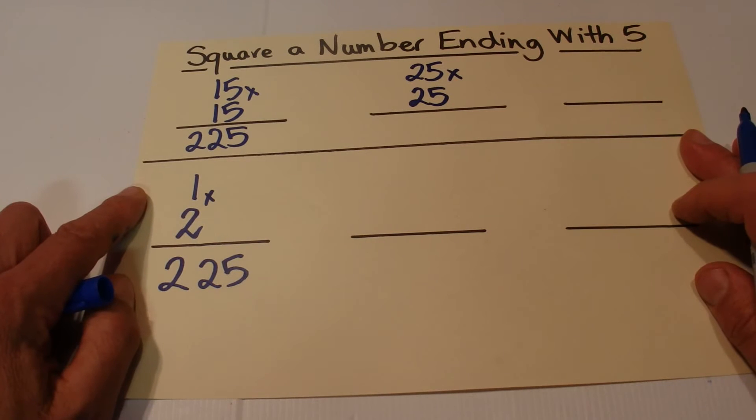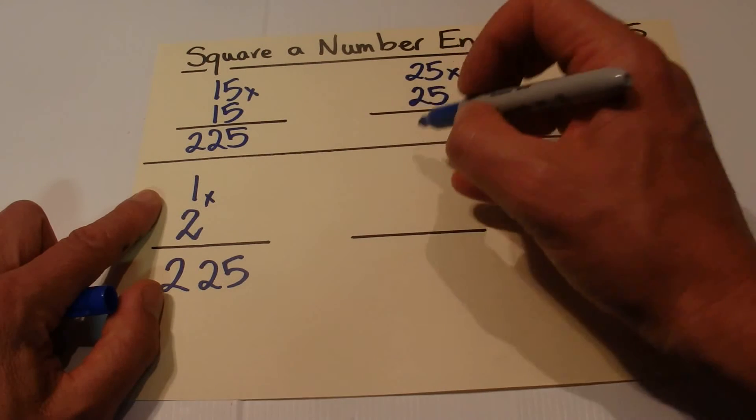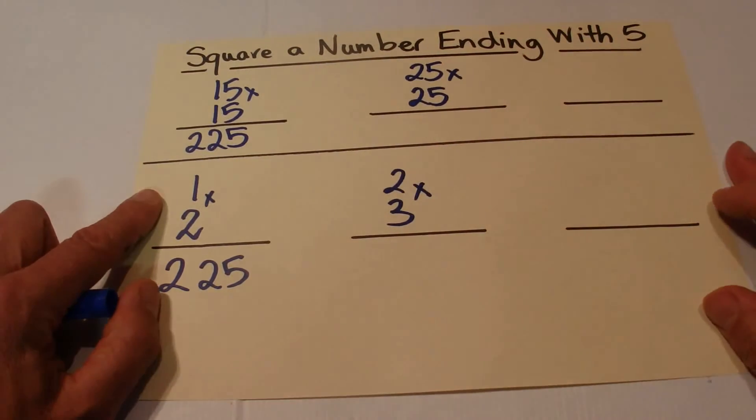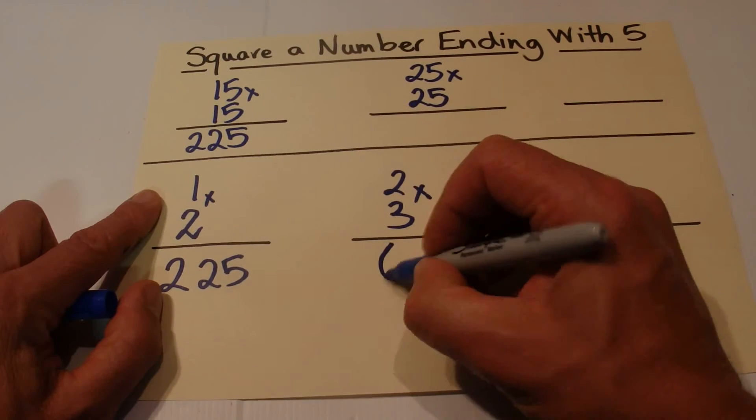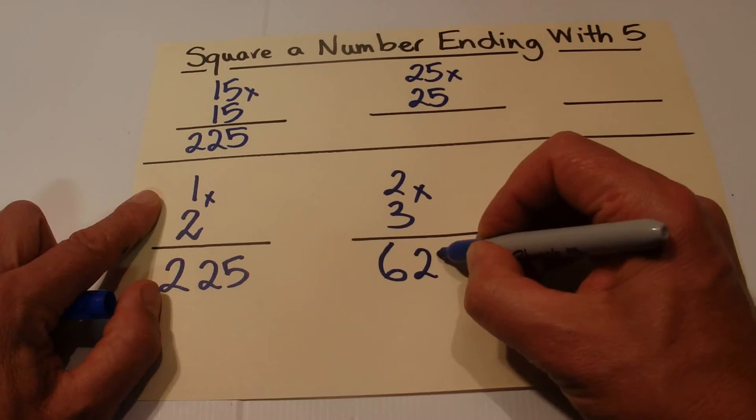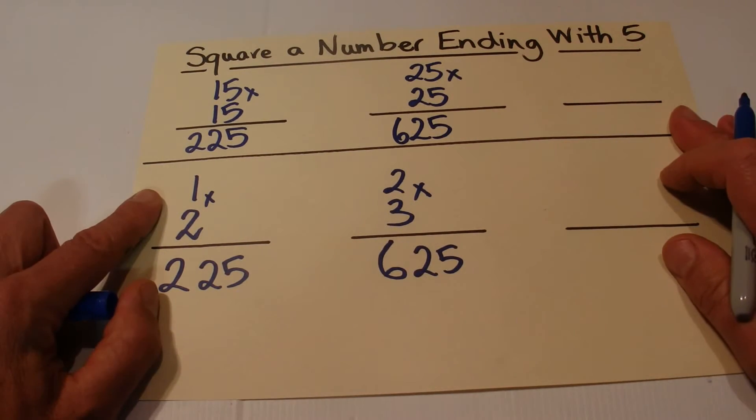And 25 times 25. Take the 2 and increase it by 1 so the 2 becomes a 3, and you multiply 2 by 3 together and you come up with 6. 5 times 5 is 25, add that on the end and the answer is 625.